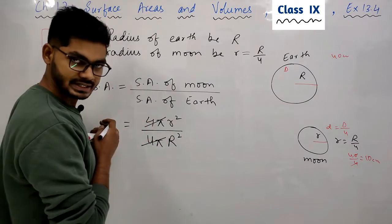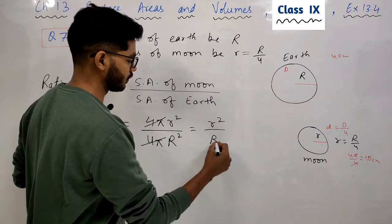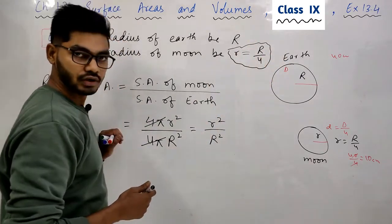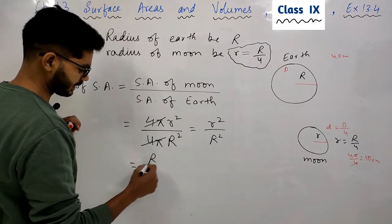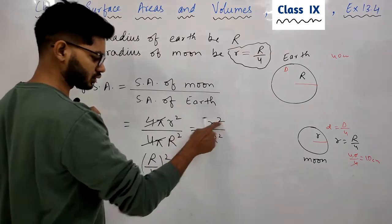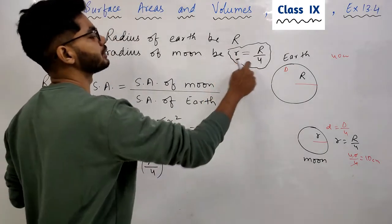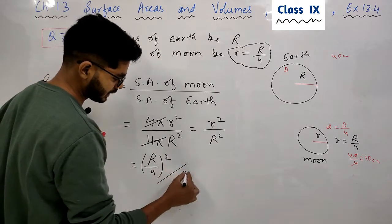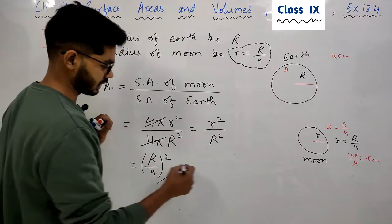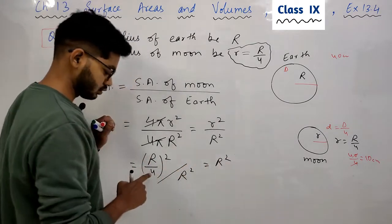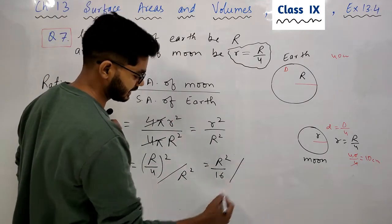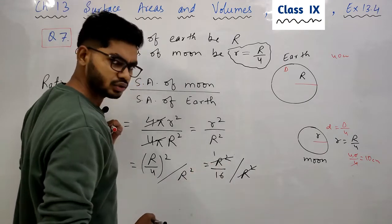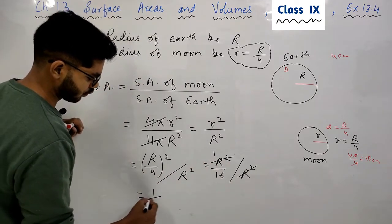4π से 4π cancel out हो गया। बचा small r² over capital R²। अब small r की value देखिए — मैंने r = R/4 लेट की हुई थी। तो small r की जगह capital R/4 put करेंगे और उसका square लेंगे। तो ऊपर आएगा (R/4)² = R²/16, और नीचे है R²। R² से R² cancel out हो गया। तो answer आया 1/16।